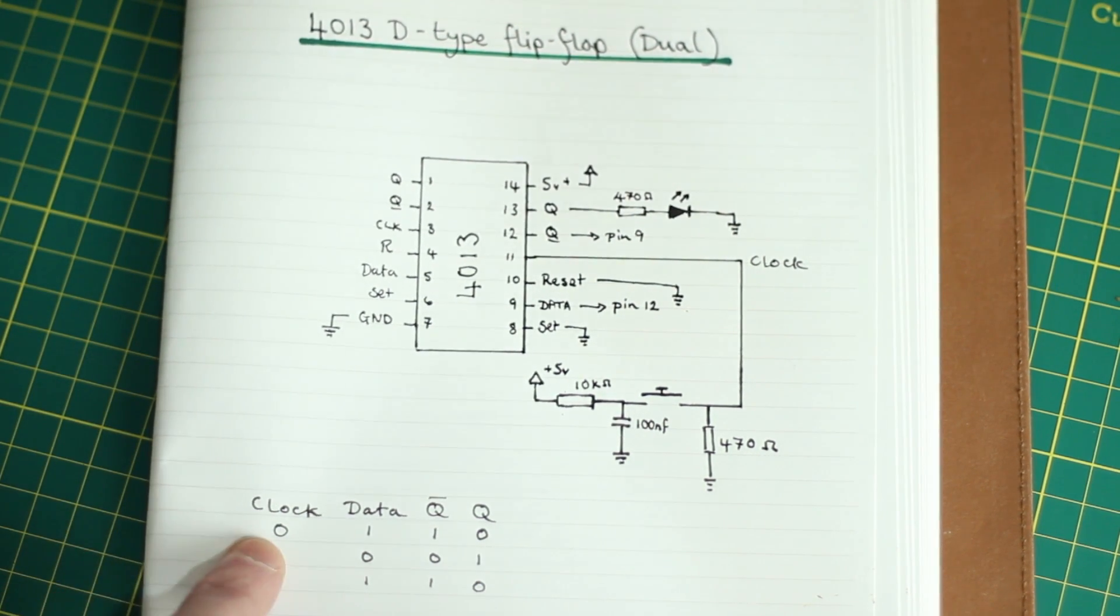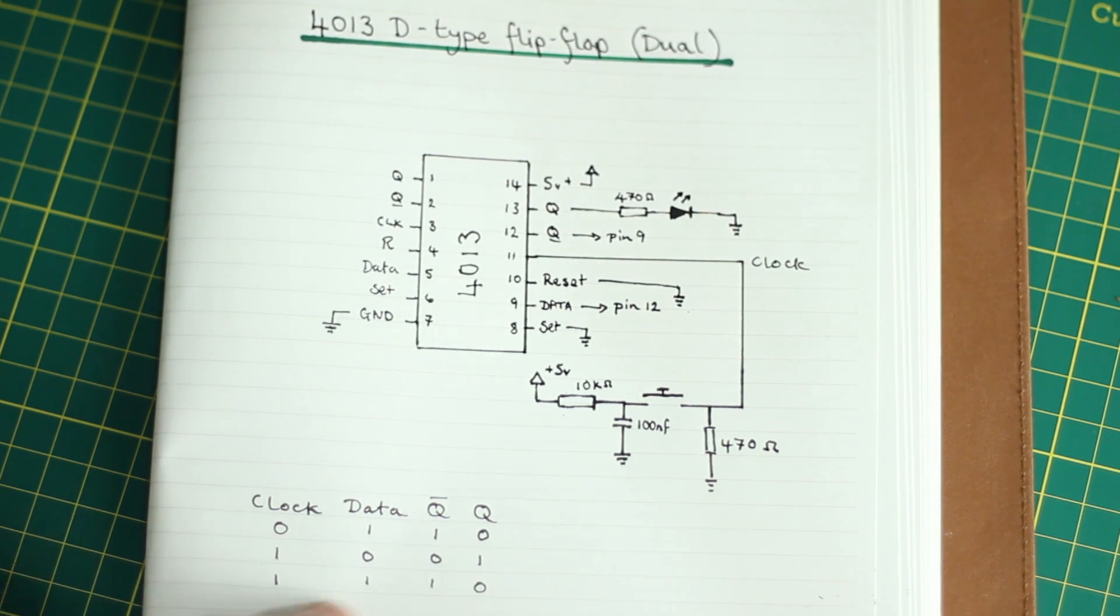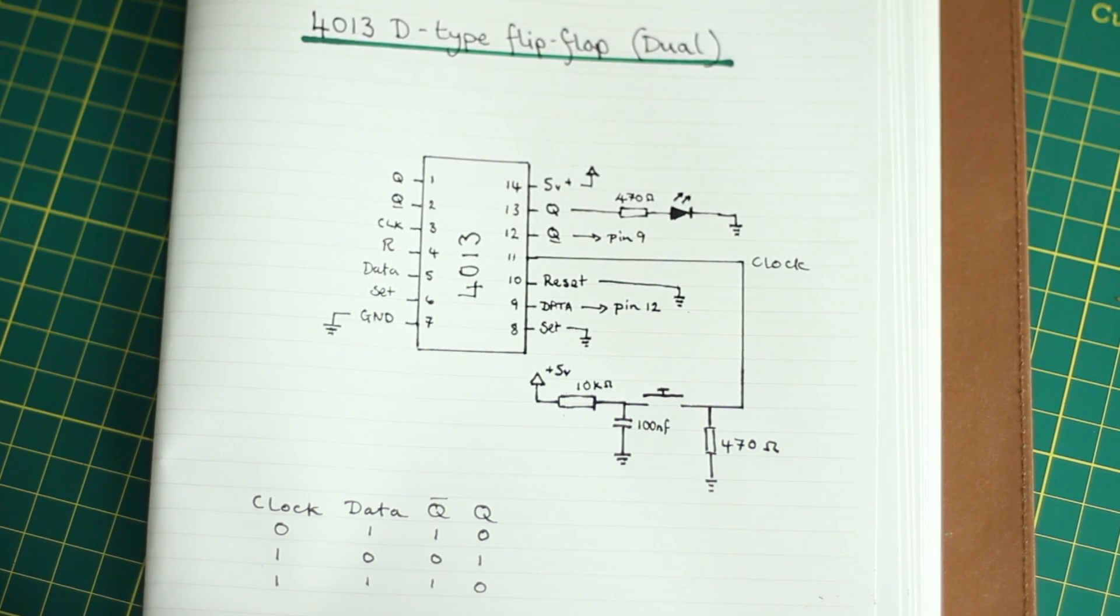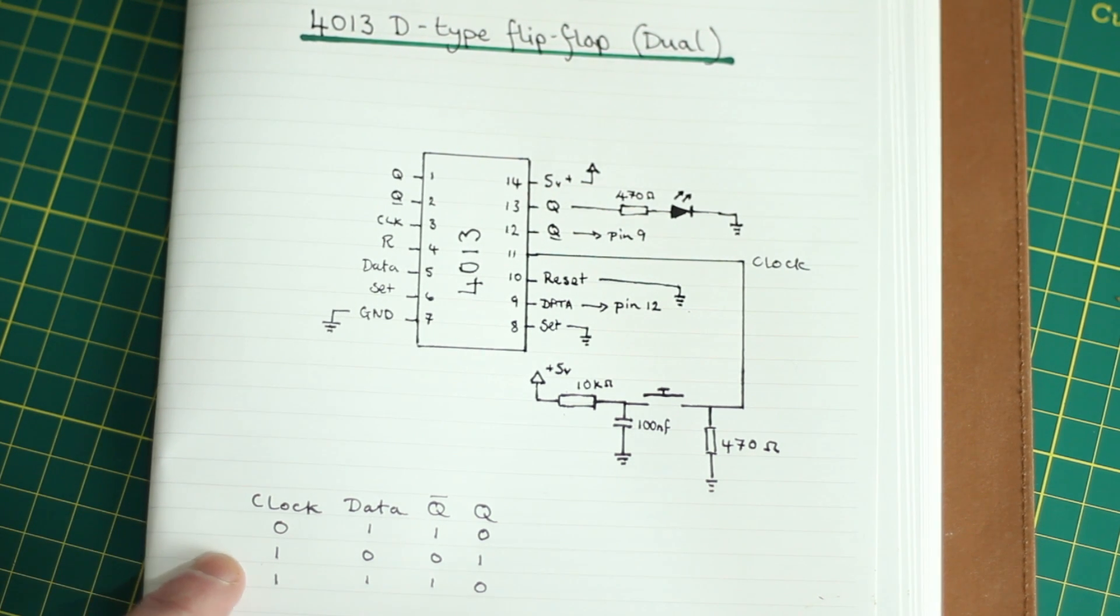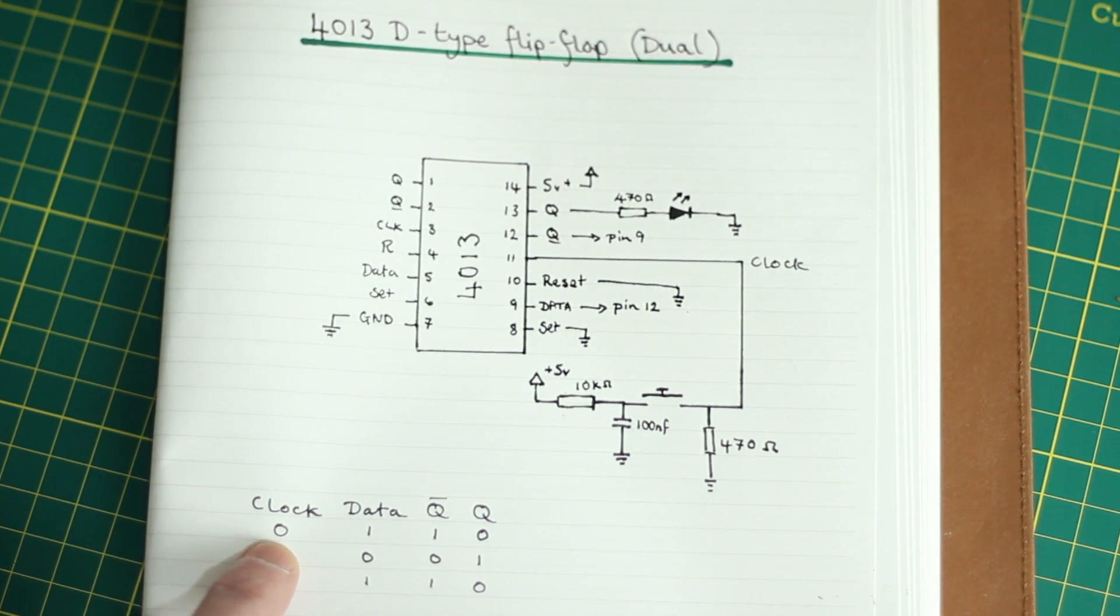We've got a very rough little truth table here which doesn't really explain too much, but I'll try and go into it so that it makes more sense. When you start out, your clock is low.